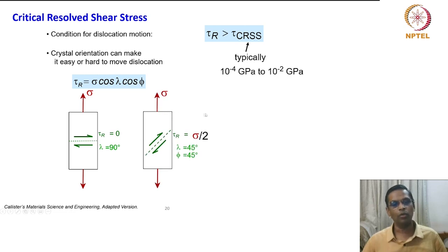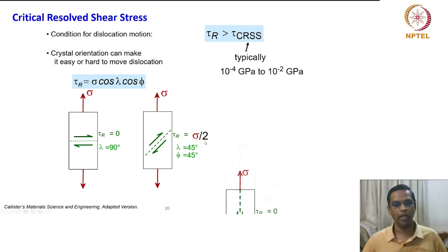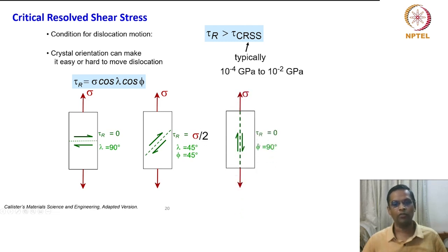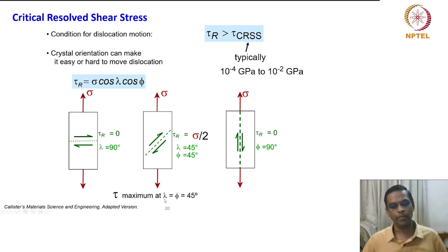On the other hand, if lambda and phi are both 45 degrees, tau_r equals sigma divided by 2. If phi equals 90 degrees, tau_r also becomes 0. So tau_r is maximum when both lambda and phi equal 45 degrees.